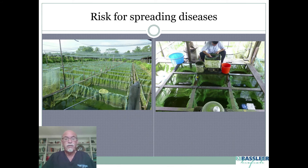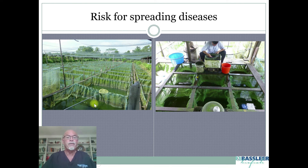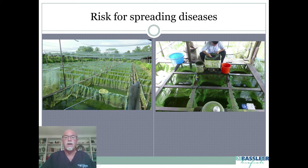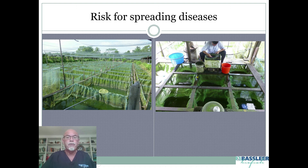There is a risk of spreading diseases when you mix different kinds of species in one big pond and breed many different varieties of fish, as an intermix of diseases is possible. Also, when selecting fish and putting them all together — nets are an important risk factor for distributing diseases.